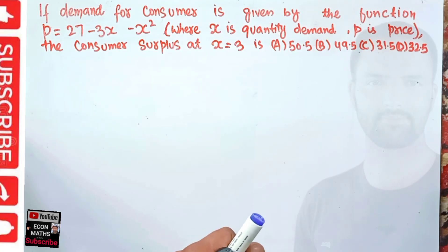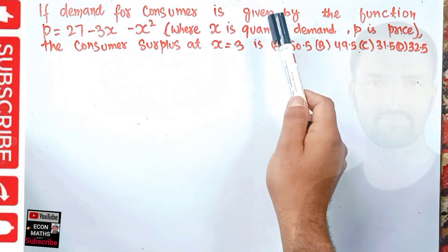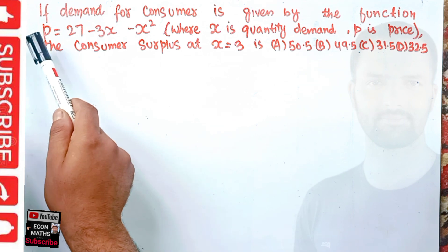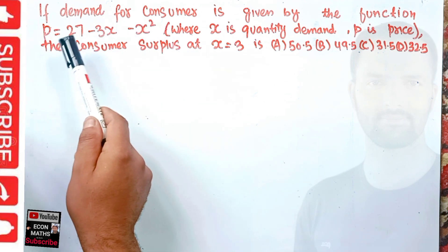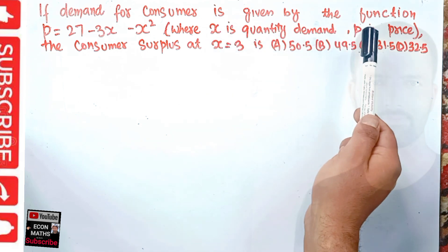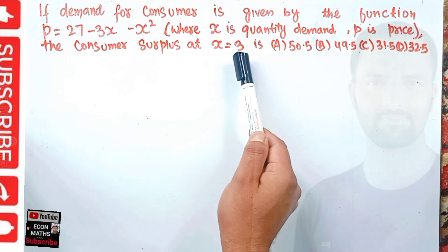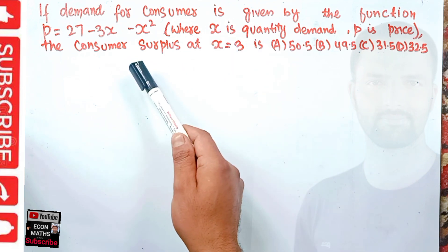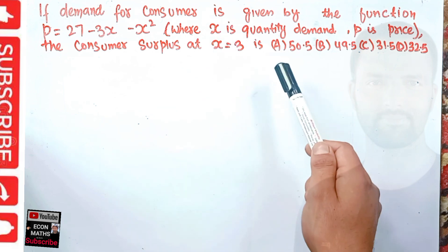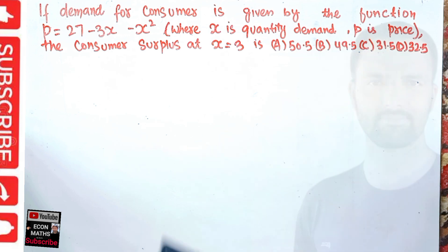In this video on the mathematical economics series, we will try to solve a problem on consumer surplus. The question is: the demand function for a consumer is given by p = 27 minus 3x minus x squared, where x is the quantity demanded and p is the price. We have to find the consumer surplus at x equal to 3 units. The options are 50.5, 49.5, 31.5, or 32.5.